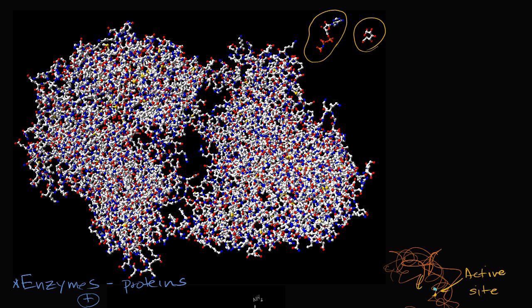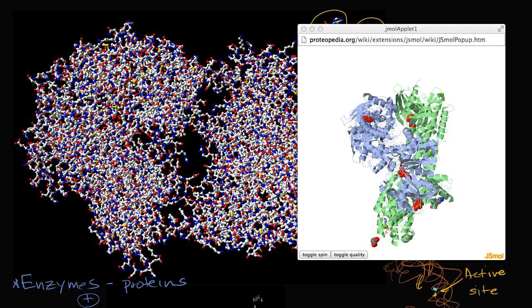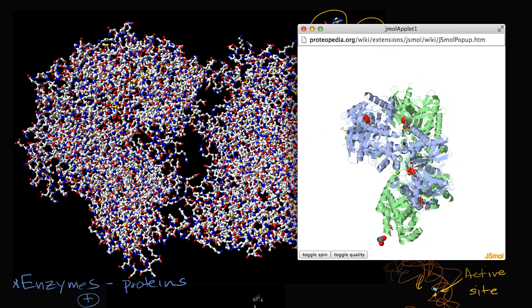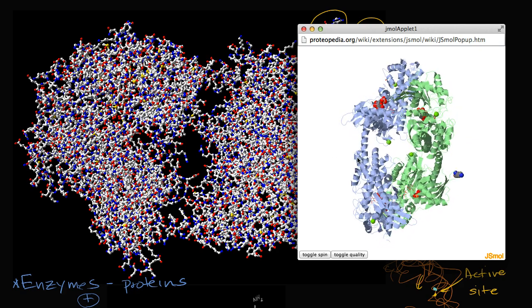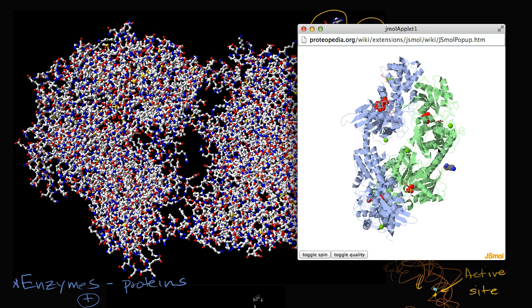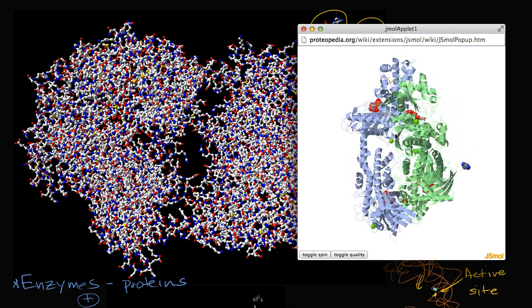And so now what I want to show you is a little three-dimensional visualization that I got from a website. And this is actually a hexokinase as well. And hexokinases come in a bunch of different varieties. But this is a pretty neat thing to look at.